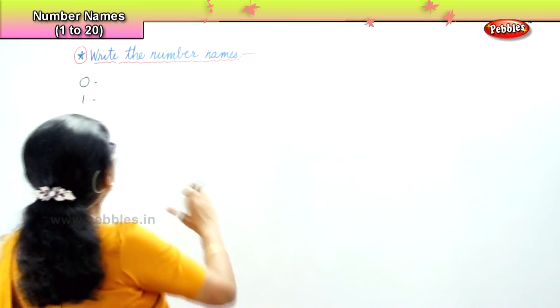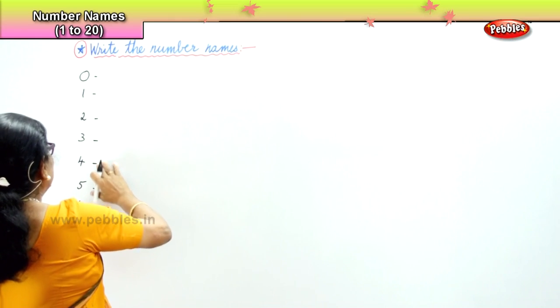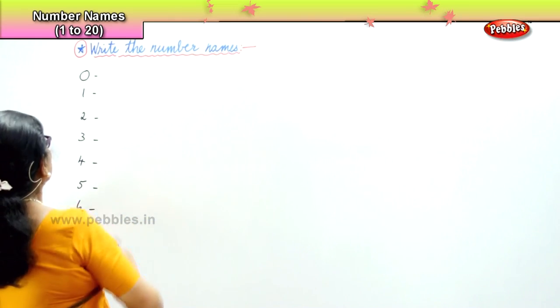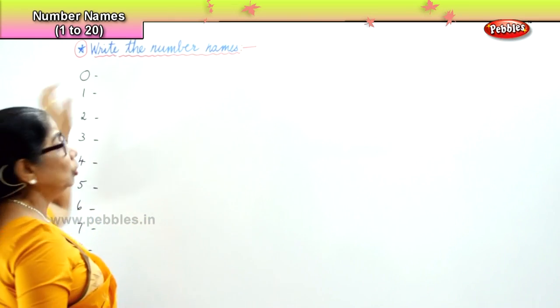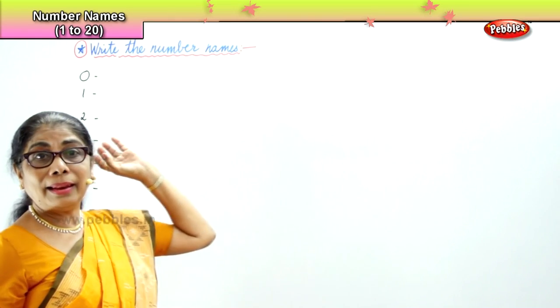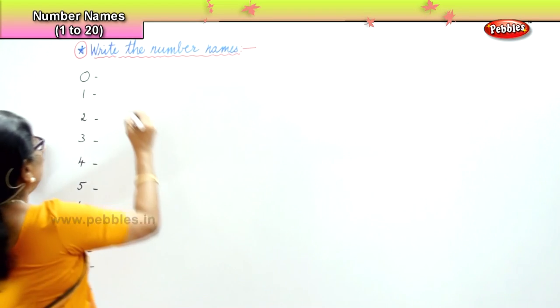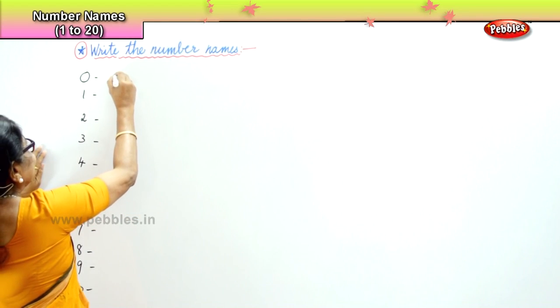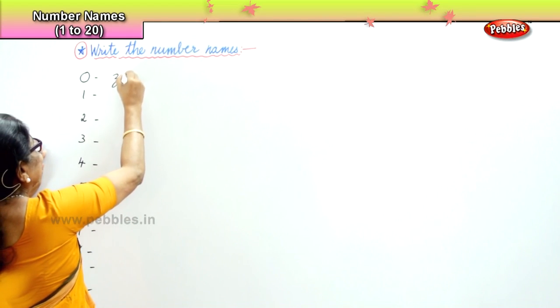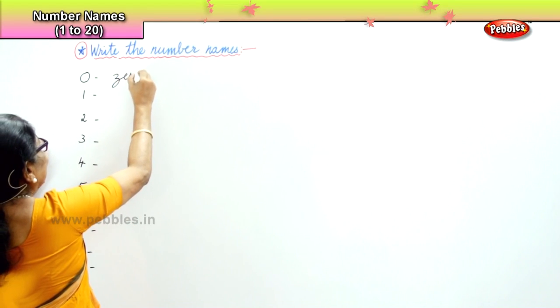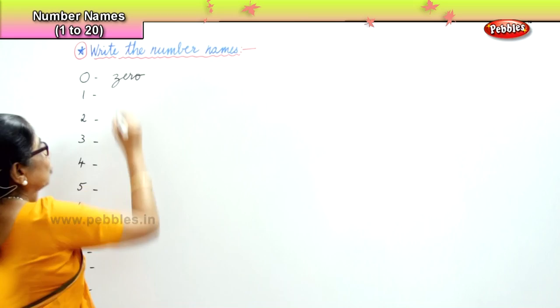It will help us later on when we do math. Now, how do you spell 0? You will write Z-E-R-O. Zero.